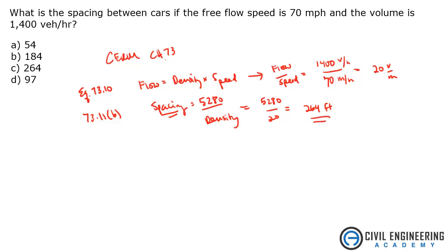That is the spacing between cars based on those parameters. The answer is C. I hope that helped you out. Head to CivilEngineeringAcademy.com for more tips and tricks related to the PE exam. Thanks.